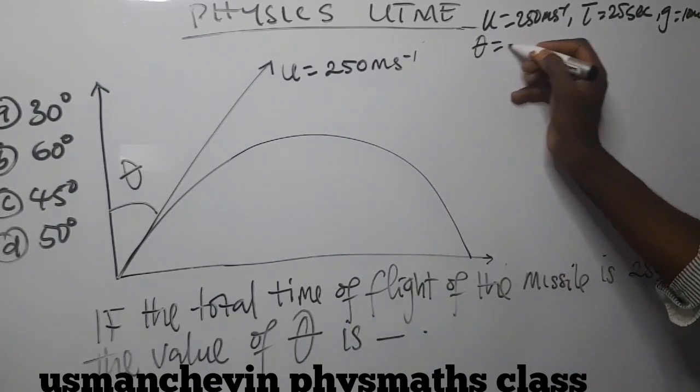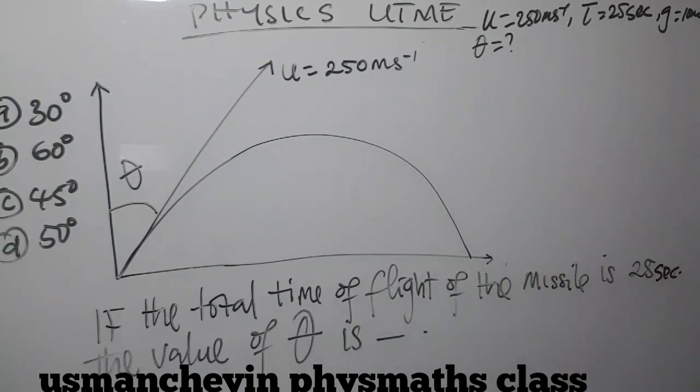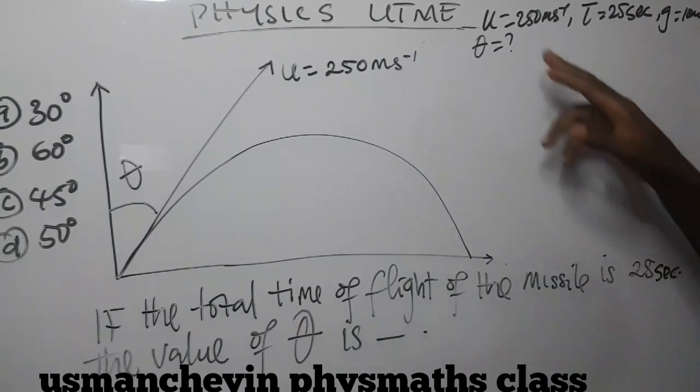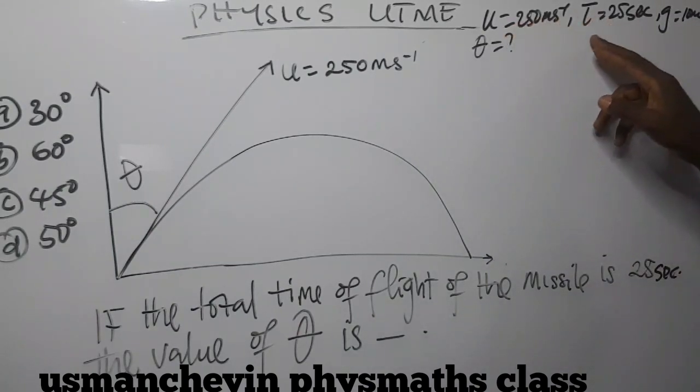But the value of theta is unknown. So we need a relationship between U, time of flight, G, and theta.